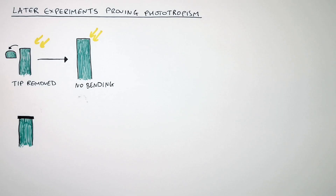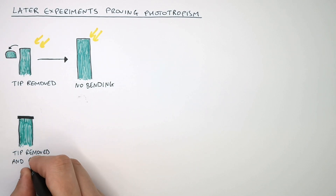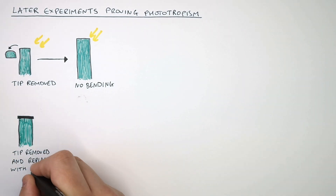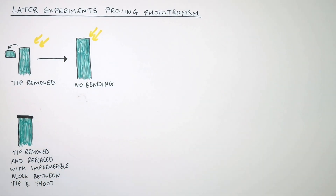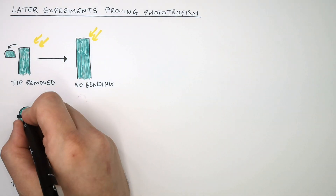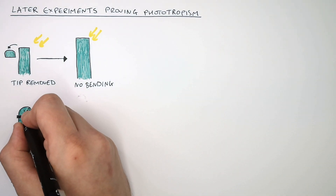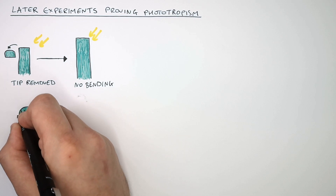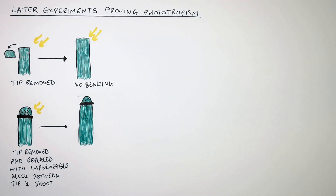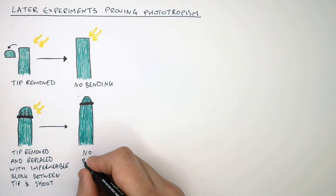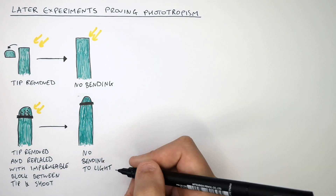In the next experiment, the tip of the shoot was removed and replaced with an impermeable block between the tip and the shoot when the tip was replaced back on. The auxins that exist in the tip of the shoot could not pass through the impermeable block. So the auxins could not move to the shaded region of the shoot, and therefore there was no bending.